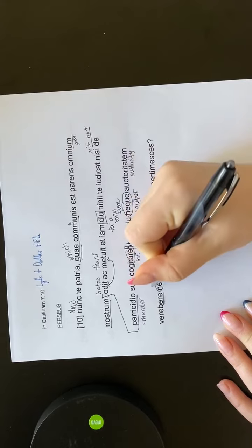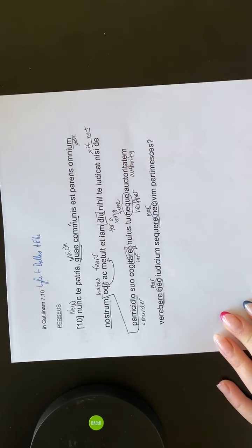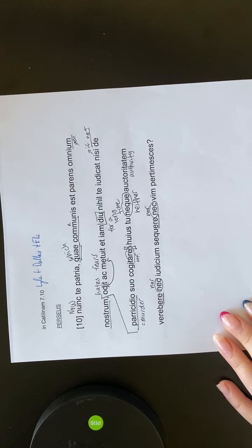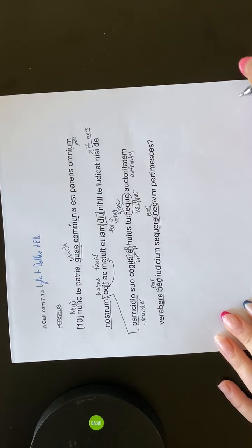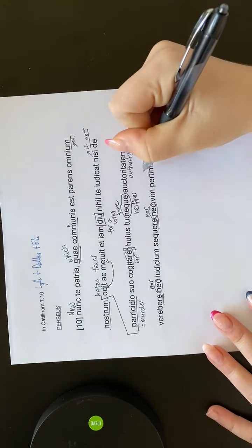Veribere is to respect. Then we've got nor showing up with nec, both the necks. And then pertimescis is fear, or like fear greatly.